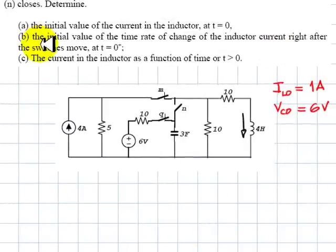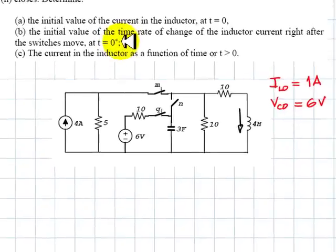For part b, find the initial value of the time rate of change of the inductor current, right after the switches move. That is at t equals 0 plus. It's time for another snapshot, this time at t equals 0 plus.